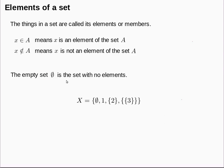We have some notation for the members or elements of a set. We use the symbol ∈ to mean that the thing x is an element of the set A, and the same symbol crossed out to mean x is not an element of A. For example, 1 ∈ {2, 1}, but 3 ∉ that set.